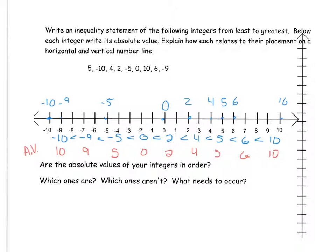Negative 10 is less than negative 9 is less than negative 5 is less than 0 is less than 2 is less than 4 is less than 5 is less than 6 is less than 10. The next part said, below, write each of the absolute values. So the absolute value of negative 10 is 10 because it is 10 away from 0. The absolute value of negative 9 is 9 because it is 9 away from 0. So here are my absolute values.